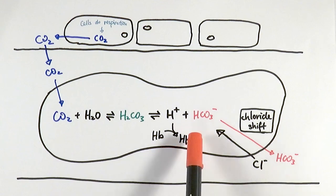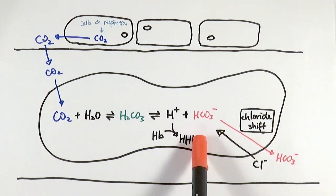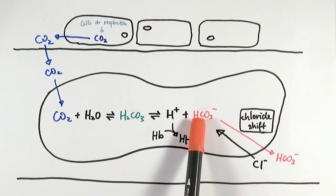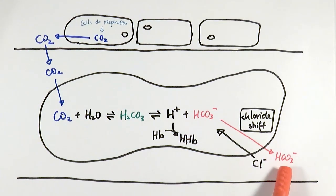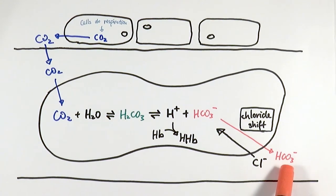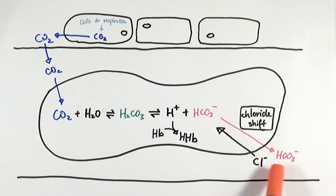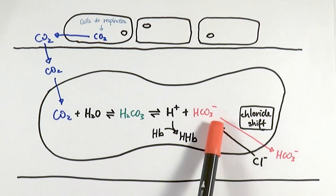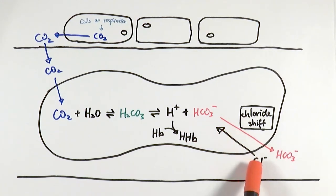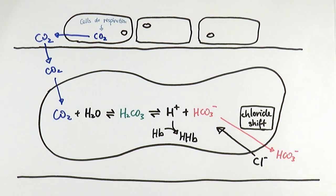The hydrogen carbonate ions are then transported out of the red blood cell to maximize the efficiency of carbon dioxide conversion and transport, and they remain stable in the plasma as they travel along. The chloride shift then occurs, where chloride ions move back into the red blood cell to balance the charges. This is what happens as the red blood cell passes through the tissues and organs.